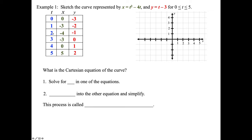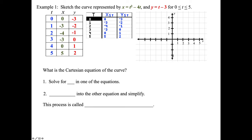Our first point is at (0, -3), right down here — we note that this is when t equals 0. I'll also show you in class how to do parametric equations in your calculator, because we don't want to crunch this by hand; we'll let the calculator do this in table format. When t equals 1, we're at (-3, -2).